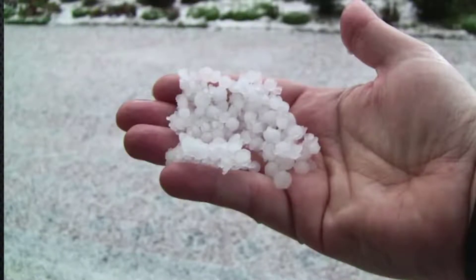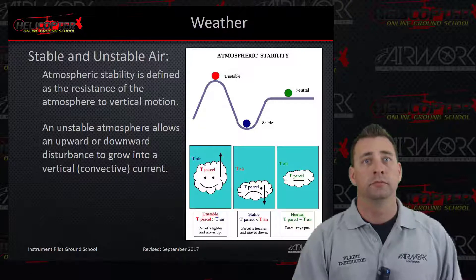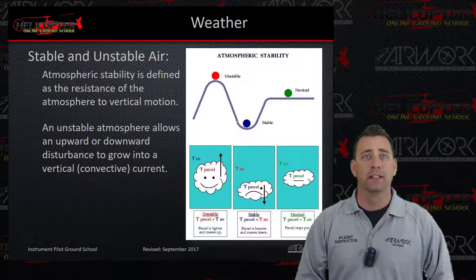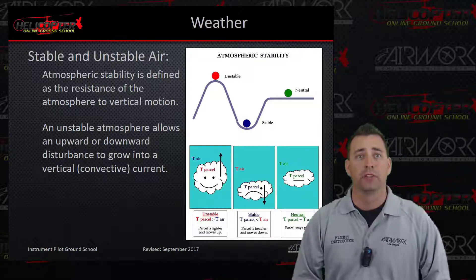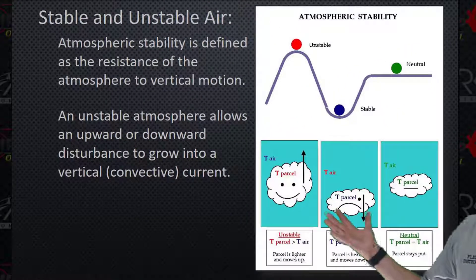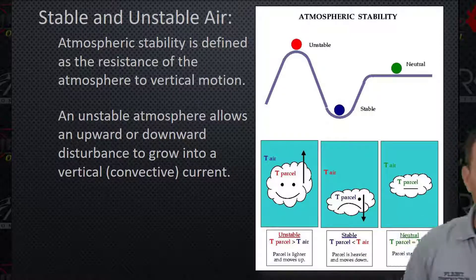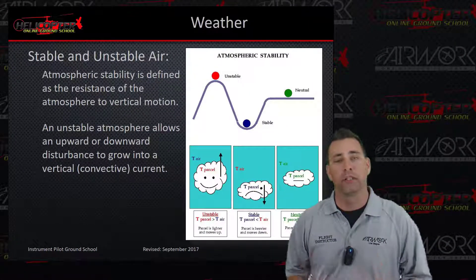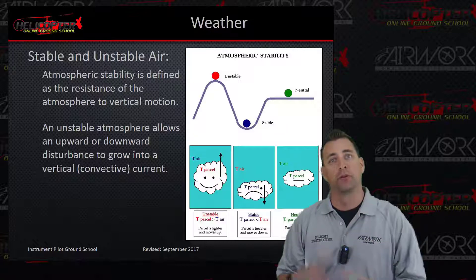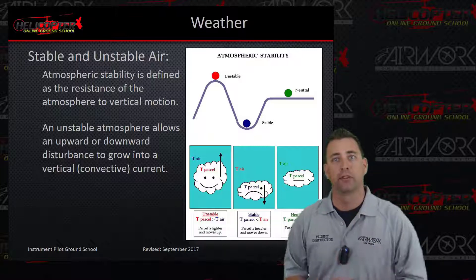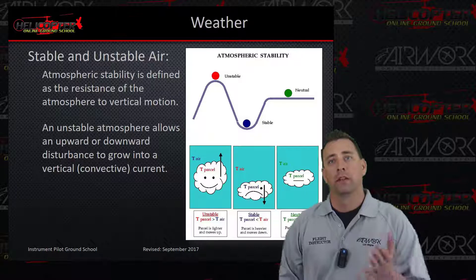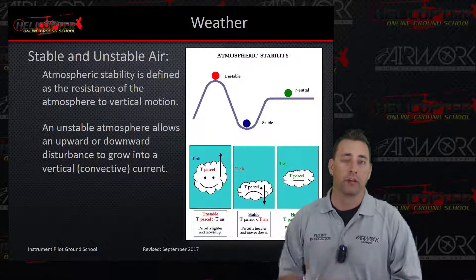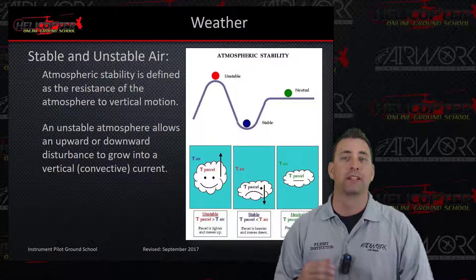The presence of ice pellets at the surface is evidence that there is freezing rain at higher altitude. Atmospheric stability is defined as the resistance of the atmosphere to vertical motion. An unstable atmosphere allows an upward or downward disturbance to grow into a vertical or convective current. In unstable air, air molecules want to rise, which creates that unstable atmosphere where water is able to condense and form clouds — this is basically how thunderstorms start to form. On the stable side, upward motion is resisted, so you don't get vertical development and water molecules don't condense as quickly.